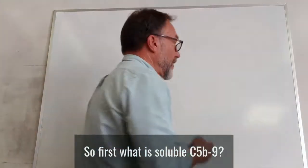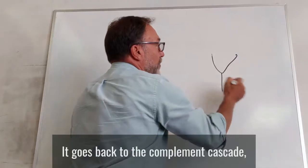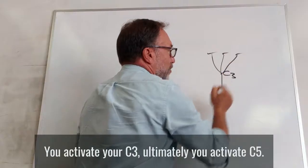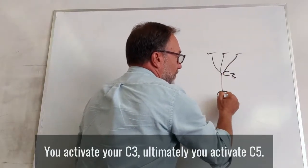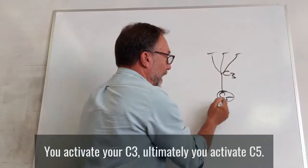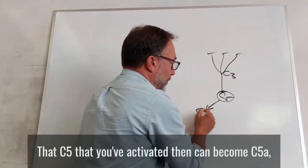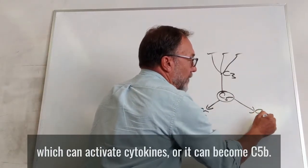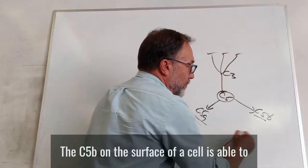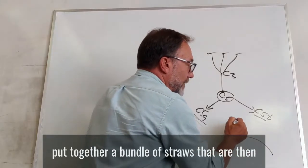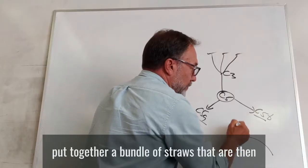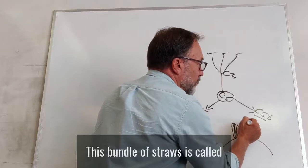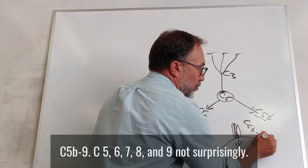So first, what is soluble C5B-9? It goes back to the complement cascade, which is a three-part cascade — you trigger it in multiple ways. You activate your C3, ultimately you activate C5. That C5 that you've activated can then become C5A, which activates cytokines, or it can become C5B. The C5B on the surface of a cell is able to put together a bundle of straws that are then able to punch a hole through the membrane. This bundle of straws is called C5B through 9.